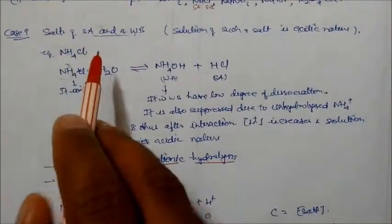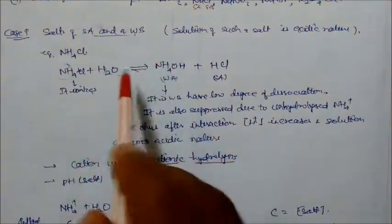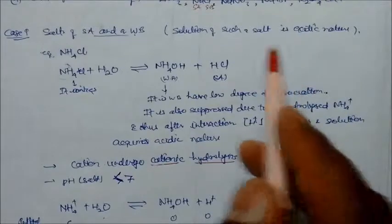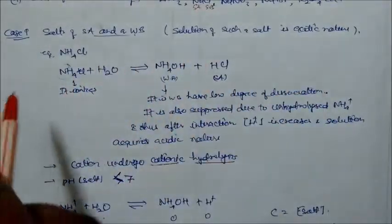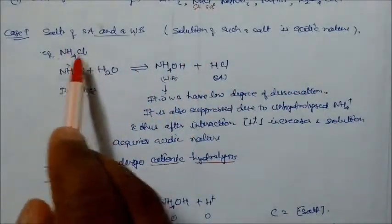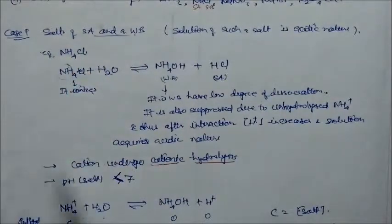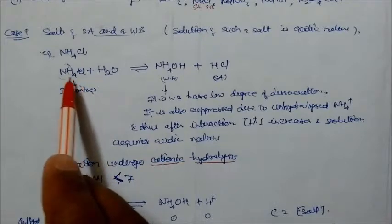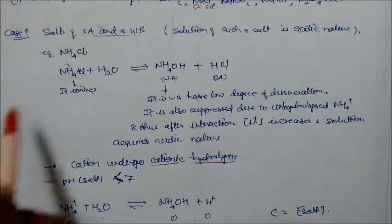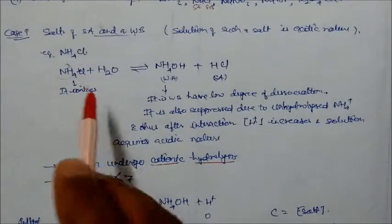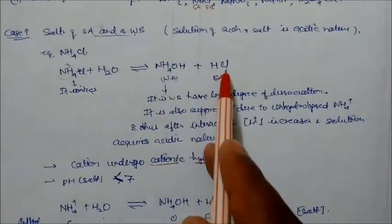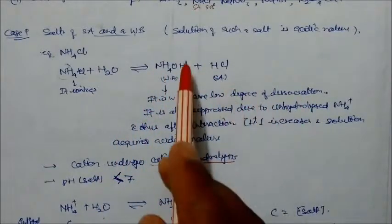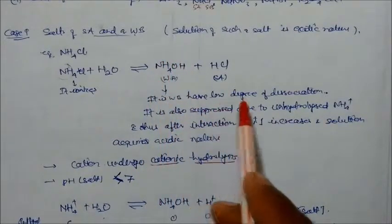Case 1: Salt of strong acid and weak base — the solution is acidic in nature (pH < 7). Taking ammonium chloride as an example: it ionizes completely (strong electrolyte), and the ammonium ion reacts with water to form ammonium hydroxide plus H⁺. Since ammonium hydroxide is a weak base, it has a very low degree of dissociation.